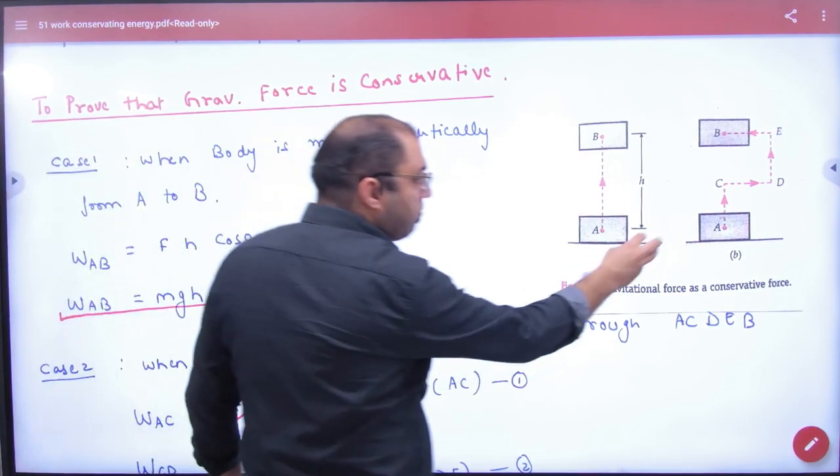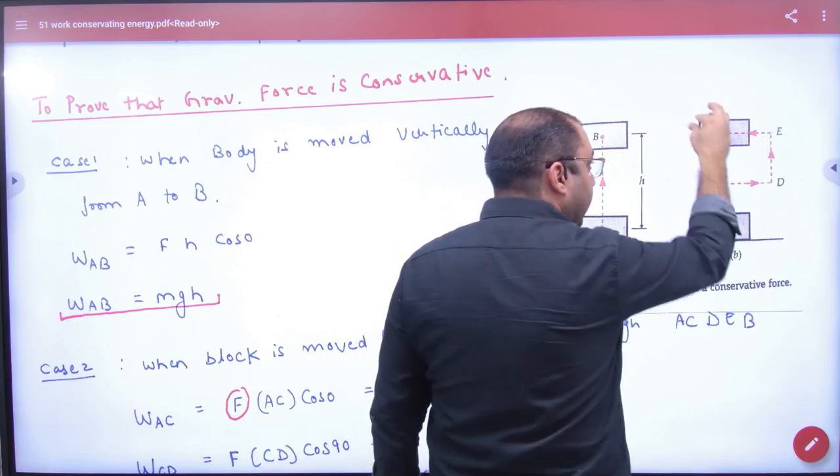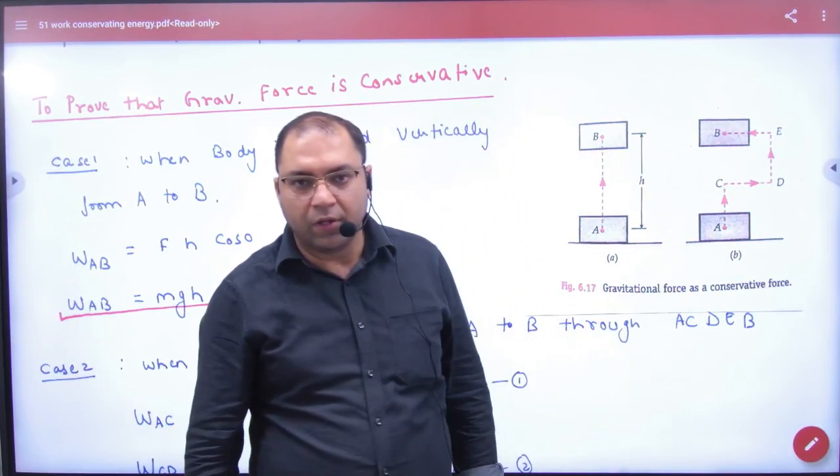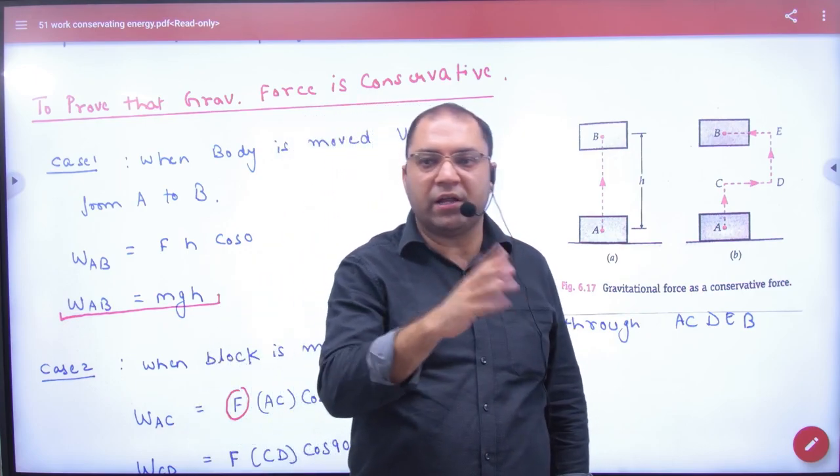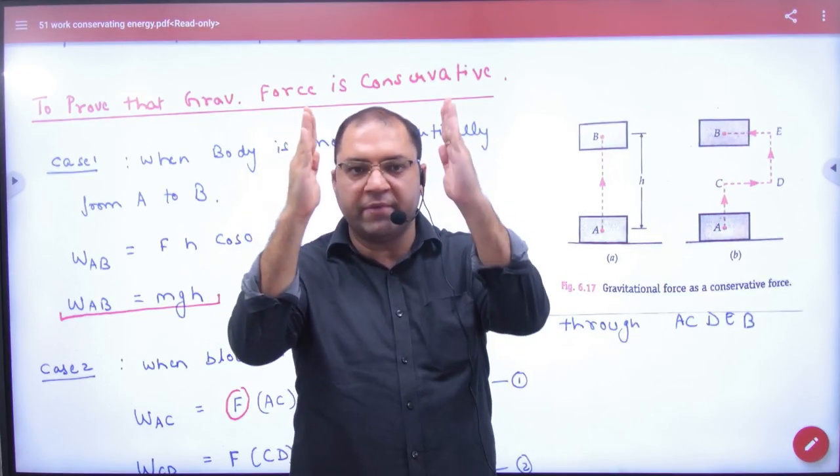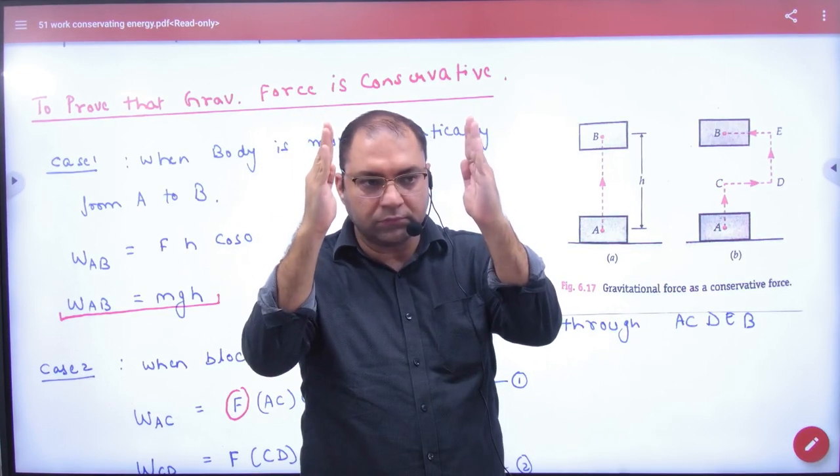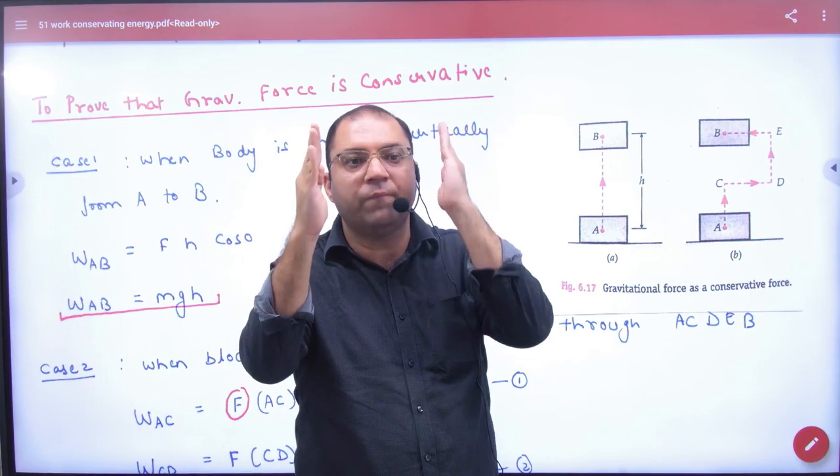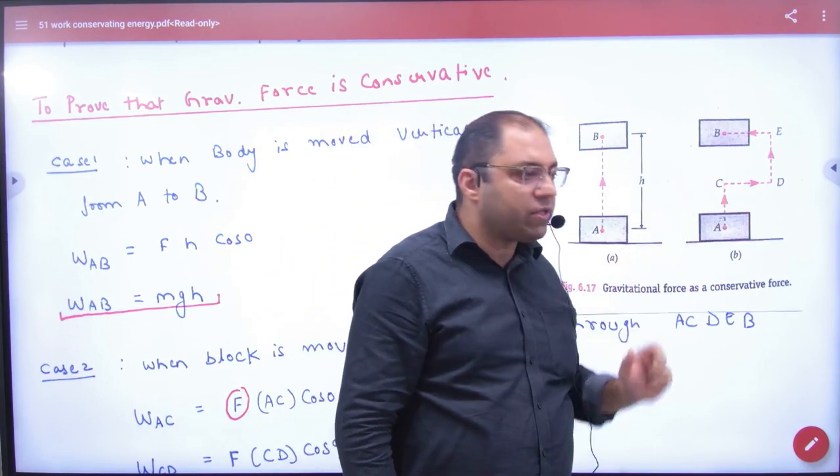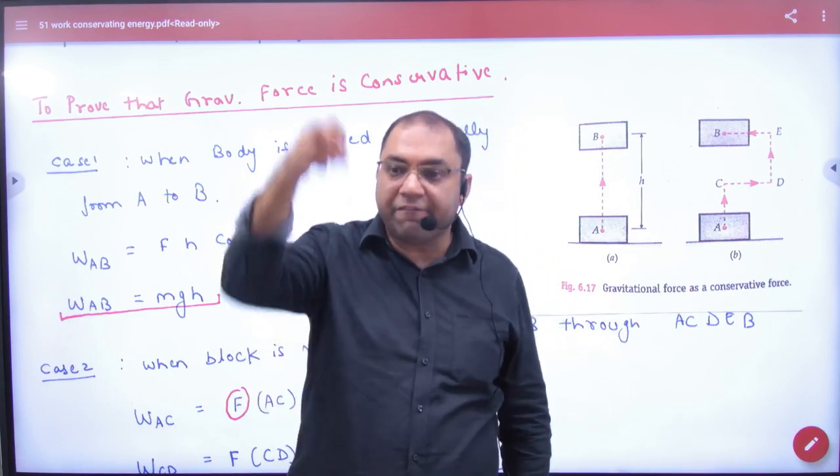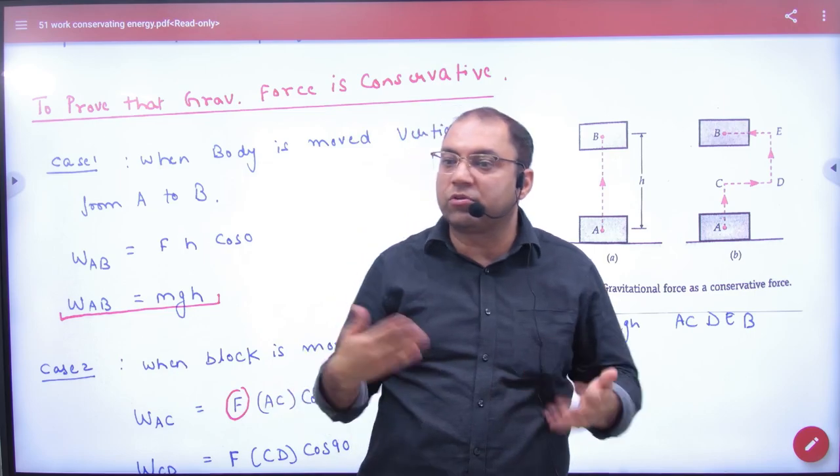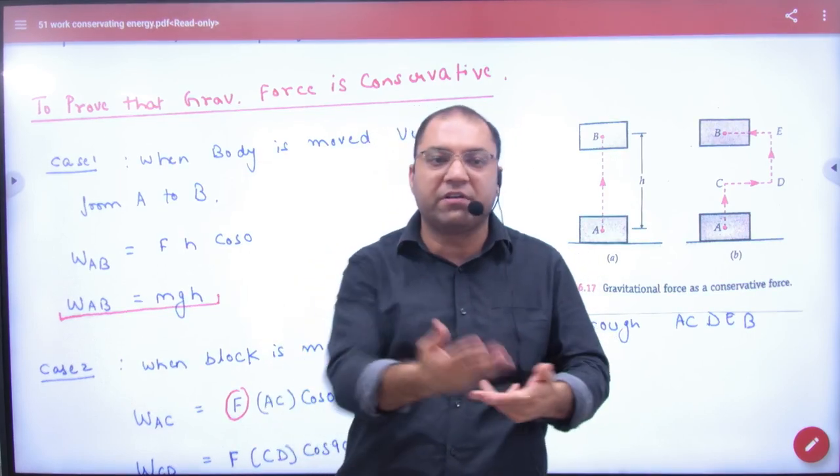But if I took some object from A to C to D to E, then when I took A to C, where did I put the force against gravity? Where did I put up mg? Displacement. What happened? AC. Mg and AC is zero. So what will work done? Mg into AC. But when we go to CD, we are looking at gravity. We are looking at horizontal force here. Because what are we proving? Gravity is conservative. So the force is just gravity.